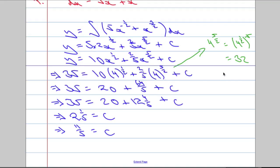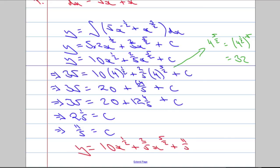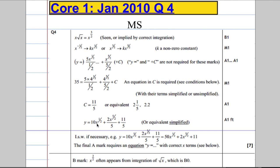Which means that y equals 10x to the power of one half, plus 2 over 5 times x to the power of 5 over 2, plus 11 over 5. If we have a look at the mark scheme: 10x to the power of one half plus 2 over 5 x to the power of 5 over 2 plus 11 over 5. Perfect.